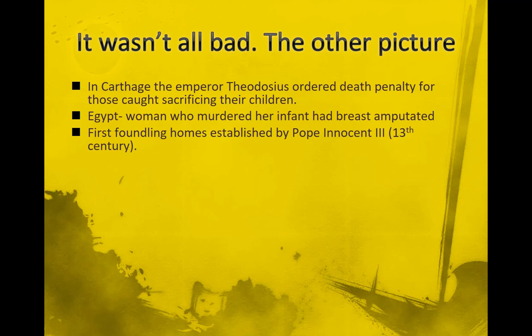In the 13th century, Pope Innocent III established the first foundling homes - essentially orphanages for children whose parents had been killed. Pope Innocent III was responsible for some of the Crusades, which left hundreds if not thousands of children without their parents. So he established these foundling homes. By our standards today, those foundling homes were probably not very good places for children to be, but you can see there were some other voices.